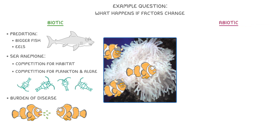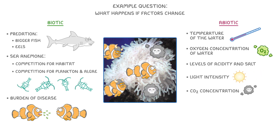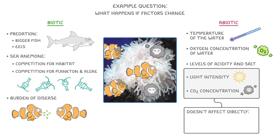Then when it comes to the abiotic factors, we can think of the temperature of the water, which might change throughout the day or throughout the year, the oxygen concentration of the water, and also the levels of acidity and salt in the water. Even though factors like light intensity and carbon dioxide concentration might not affect the clownfish directly, they might affect other species around them, like the sea anemone, which will in turn affect the clownfish.